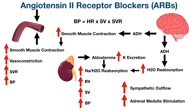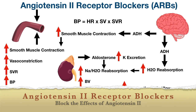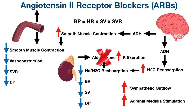Angiotensin 2 normally binds to receptors on blood vessels, causing smooth muscle contraction and vasoconstriction. Blocking those receptors with an ARB results in less vascular smooth muscle contraction and less vasoconstriction, which decreases systemic vascular resistance and blood pressure. On the kidneys, ARBs mean less sodium and water reabsorption at the proximal tubule and less aldosterone release, which means less reabsorption at the distal tubule — all decreasing blood volume, stroke volume, and blood pressure.